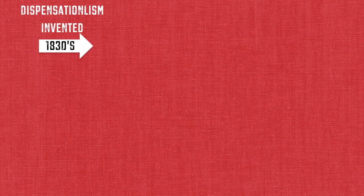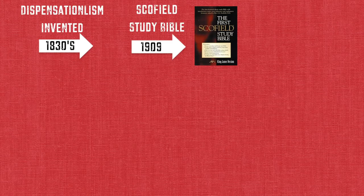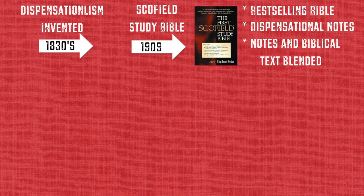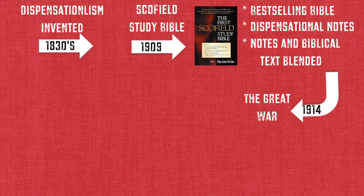But in 1909, C.I. Scofield, who loved dispensational theology, published the Scofield Bible, which became the number one selling Bible in the 20th century. The notes were filled with dispensational theology, and in fact the line between the notes and the biblical text itself wasn't quite clear, so that when people read Scofield's dispensational theology, they sometimes thought they were actually reading the divine revelation of God's word. And when 1914 happened and World War I broke out, people lost their optimism that the world was getting better and getting saved. Postmillennialism as a view was dead in the water, and Christians were converting to dispensationalism like there was no tomorrow.